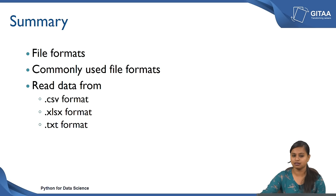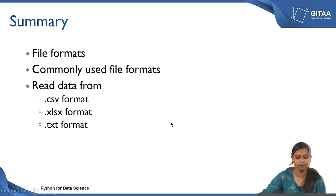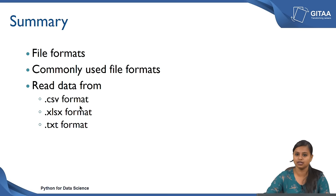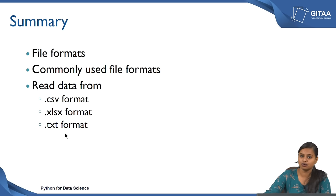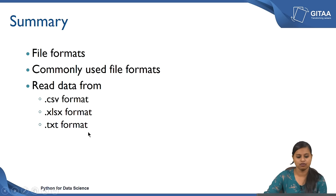Now we have come to the end of the lecture where we have seen about importing different formats of data into Spyder. Let us summarize what we have seen. We have seen different formats of files and what are the commonly used file formats. We have seen three formats of data: the .csv format — how comma separated values data will look like and how to read them into Spyder; the .xlsx format — how an Excel sheet and the data inside it will look like; and how to read text formatted data using both 'read_table' and 'read_csv' commands. On the whole, we have seen how to read different formats of data into Spyder. Thank you.